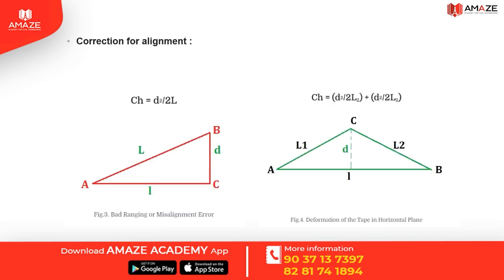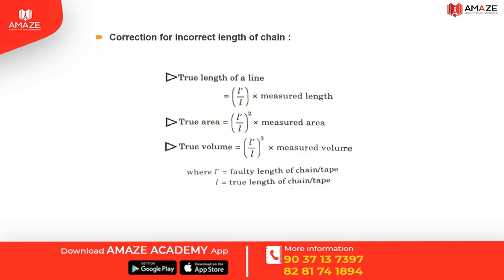The correction for alignment has two cases: one is bad ranging or misalignment error, and the second is deformation of the tape in the horizontal plane. The equation is D squared by 2L, and the correction for alignment is always subtracted. The correction for incorrect length of the chain is also applied.